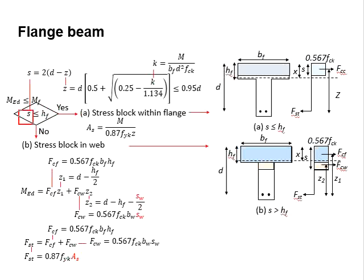If s is less than hf, the stress block is within the flange. The calculation is relatively straightforward: simply use the equations for s for a typical rectangular beam. The moment M refers to the moment acting on the member, while z is obtained from the lever arm equations.